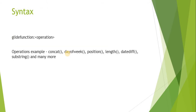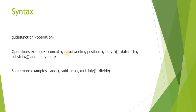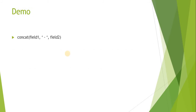Next is the syntax. You have to use 'glide function' then a colon and then the operation you are trying to perform — for example, concatenate, return day of the week, position in a string, length, date difference between two dates, substrings, and many more. Additional examples include add, subtract, multiply, and divide. Some functions take only one parameter and some take two or more parameters. We will see them in the demo.